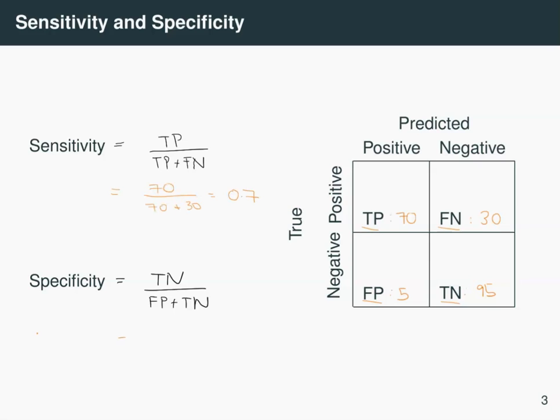And what about specificity? Well, we've got 95 true negatives divided by 5 false positives plus 95 true negatives. So that gives you a specificity of 0.95 or 95 percent.